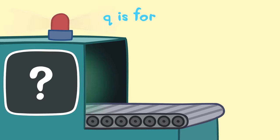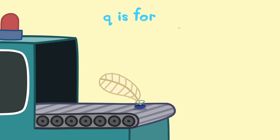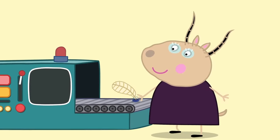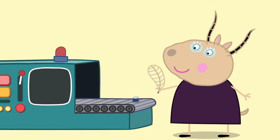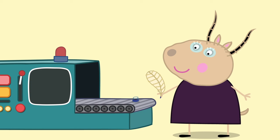Q is for... Well done! Q is for quill. A quill is a pen made from the hollow stem of a feather. When Madame Gazelle was young, she used to write with a quill. Well done for naming all of the items beginning with the letter Q.